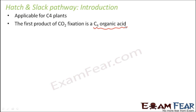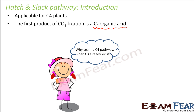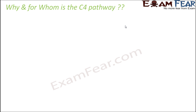That first product is oxaloacetic acid, a four-carbon atom organic acid. Now the question arises: why is a C4 pathway needed when the C3 pathway already exists for all photosynthetic plants? Why do we need another pathway when all photosynthetic plants can synthesize sugar using the C3 cycle? Let us see why, and for whom, the C4 pathway exists.